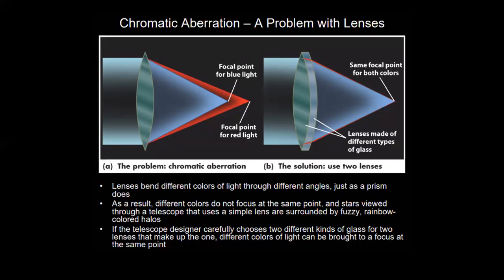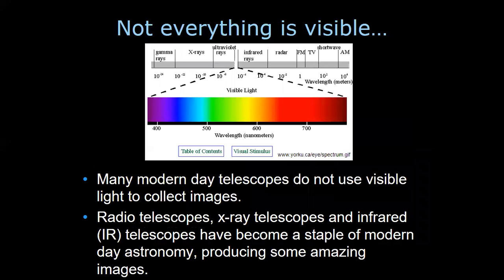However, mirrors are better than lenses — they are cheaper and more affordable. In the electromagnetic spectrum, we have many types of rays beyond visible light: gamma rays, X-rays, ultraviolet rays, infrared rays, radar, and radio waves.